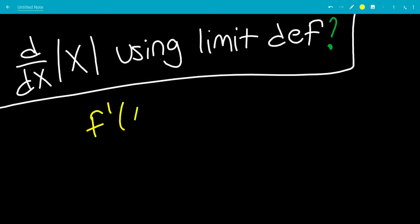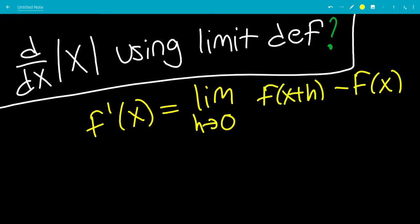Okay, so f prime of x, or the derivative of f of x with respect to x, is defined as the limit as h goes to 0 of f of x plus h minus f of x all over h.